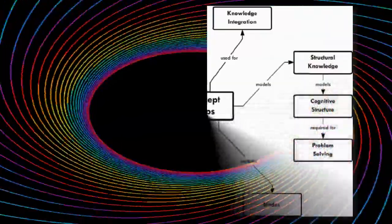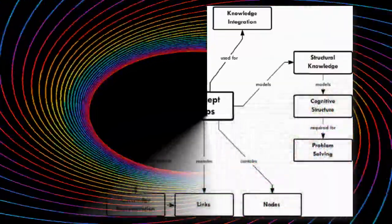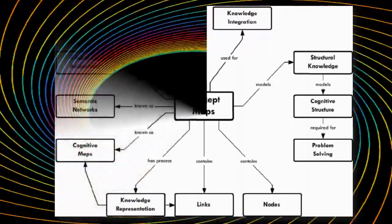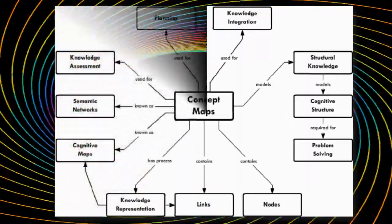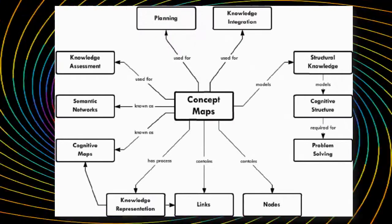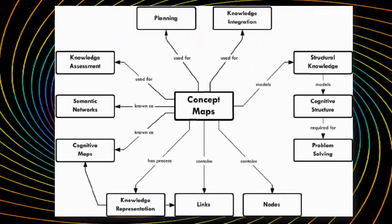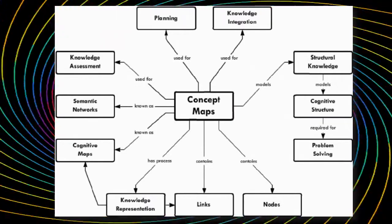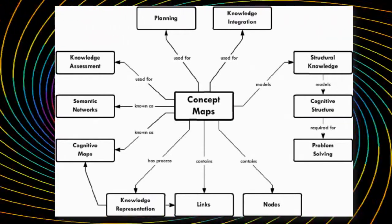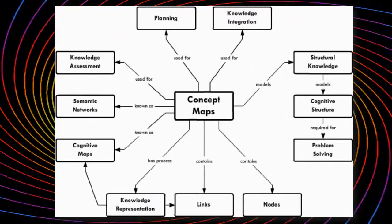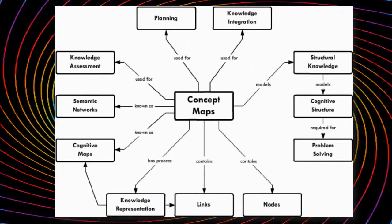The concept map is used for knowledge assessment, planning, and knowledge integration. The concept map is also known as a schematic network or cognitive map. It has the process of knowledge representation and providing it in map form. It actually contains links and nodes. It models structural knowledge and cognitive structure, which is very important for problem solving.